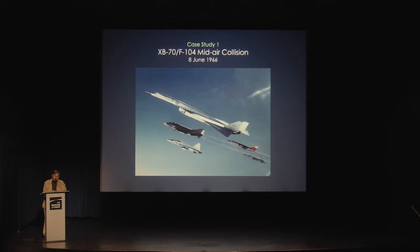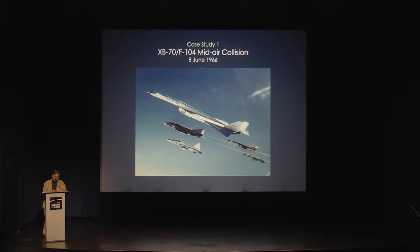In June 1966, a representative of General Electric Corporation requested a formation flight for the purpose of shooting publicity photos of a group of airplanes all powered by GE engines. They included the XB-70, an F-4, F-5, T-38, and F-104. The photo mission was included on a non-interference basis at the end of a regularly scheduled XB-70 test flight. Motion picture and still photographers were carried aboard a civilian Learjet flying chase. A pre-flight briefing failed to include specific separation distances for each aircraft or to formally designate a formation commander.